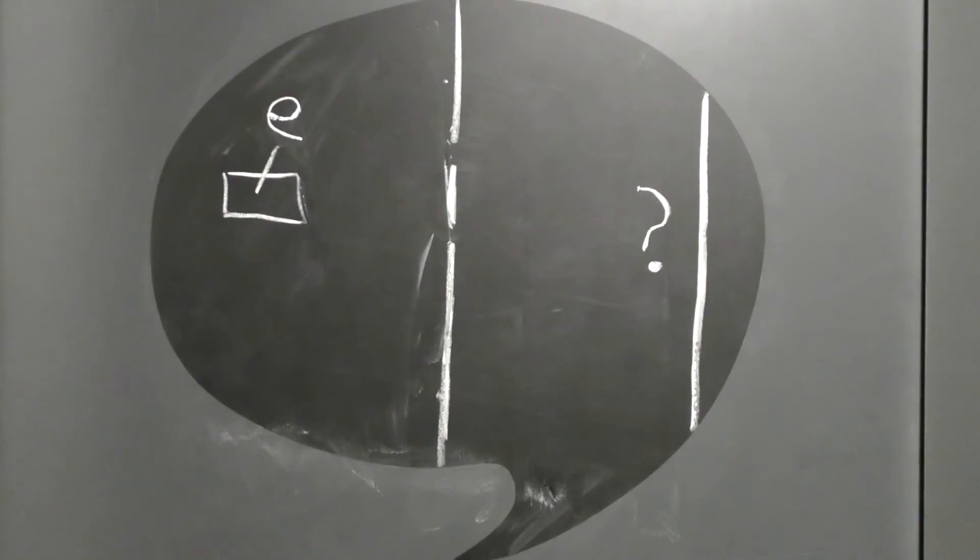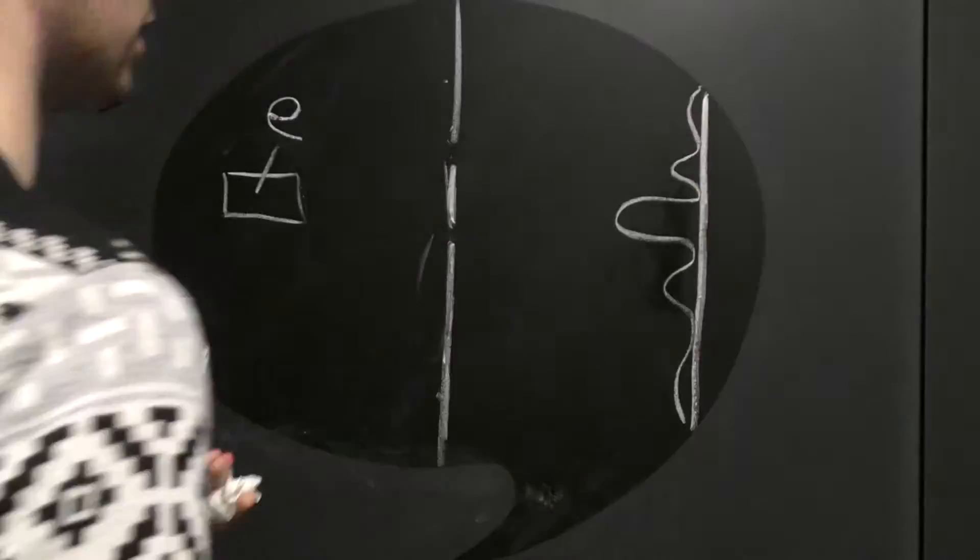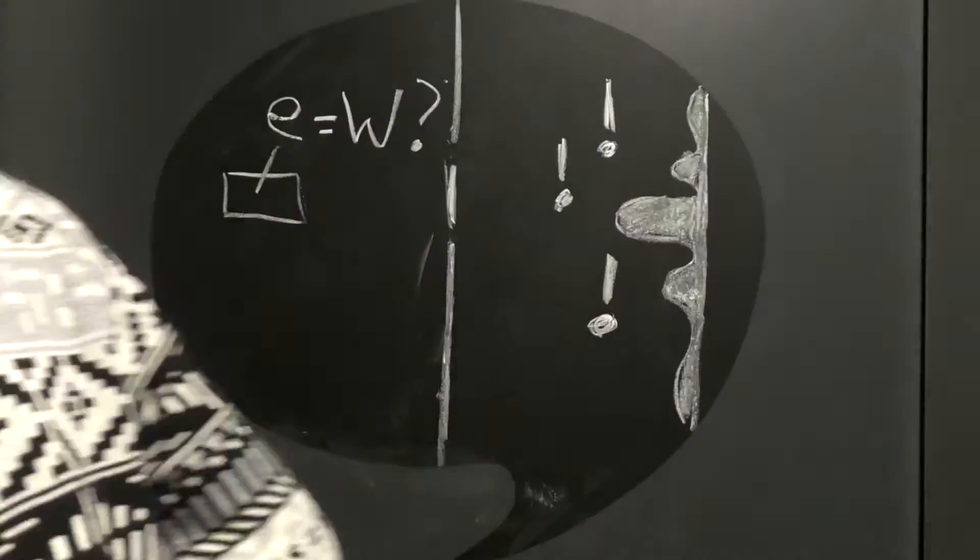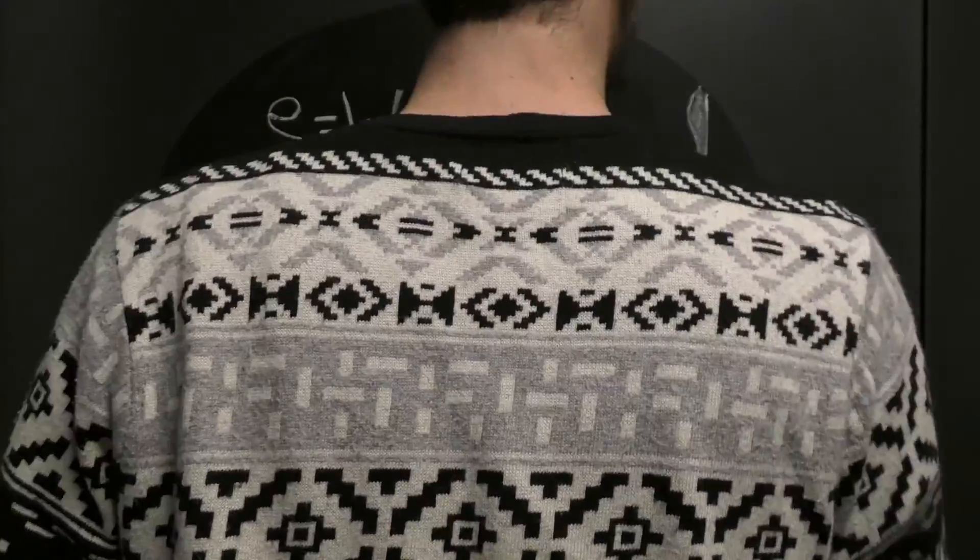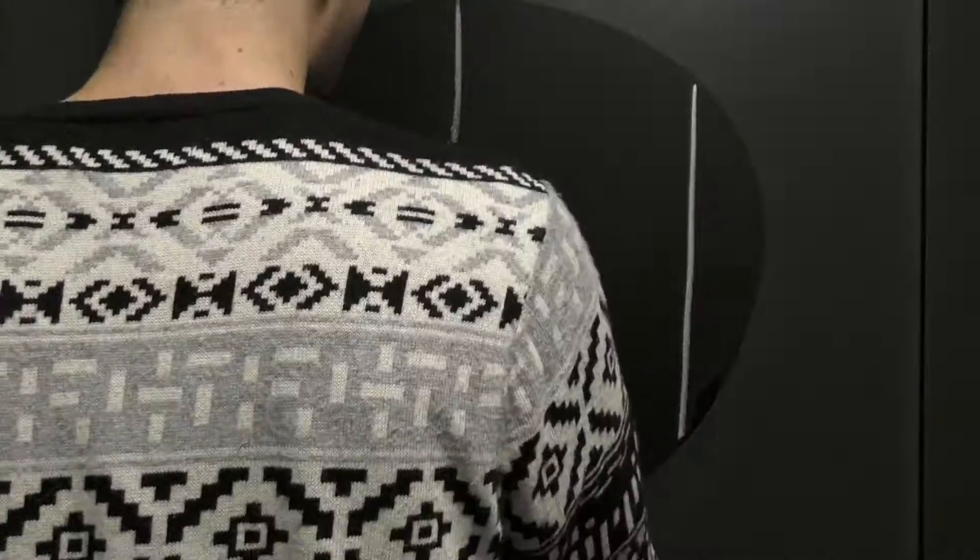What will happen when electrons are put through this experiment? If they really are particles, we would expect them to create the two peaks we have seen earlier, but surprisingly, they create an interference pattern. Does this mean that electrons are waves?